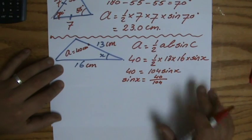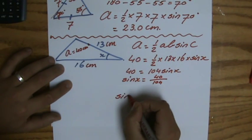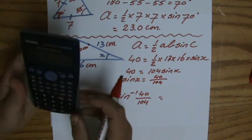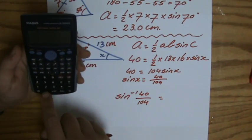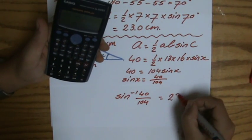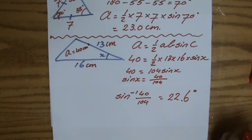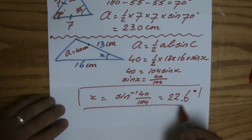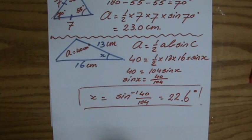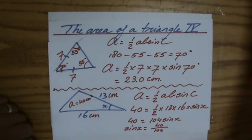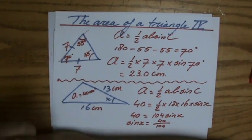Now I divide both sides by 104, so the sine of X equals 40 over 104. To find X, I have to do the inverse. Grab my calculator: shift sin of 40 divided by 104 — make sure you close those brackets. And it tells me 22.6 degrees, to one decimal place for an angle. So that would be my X. The area of any triangle — you don't need that perpendicular height anymore. It's one-half times A times B times the sine of C. Any questions? Don't be shy, just send me a message and I will help you.